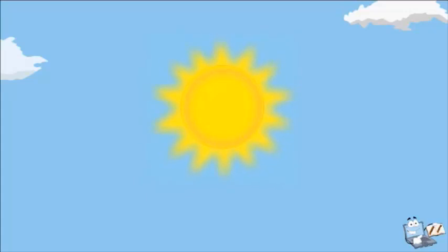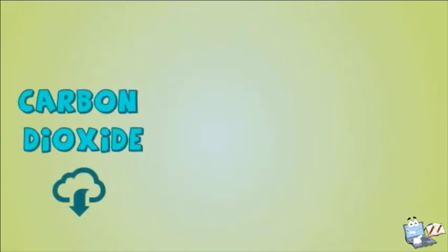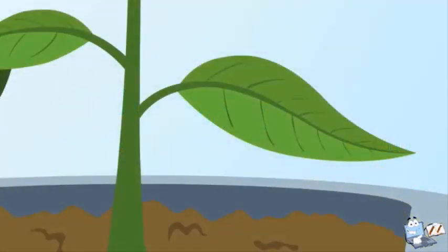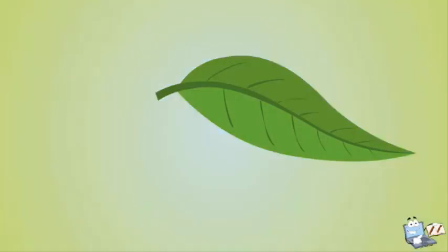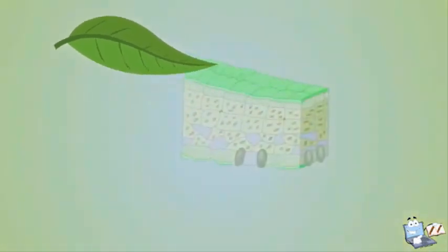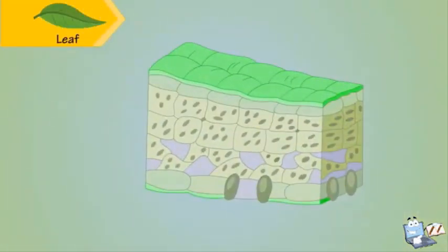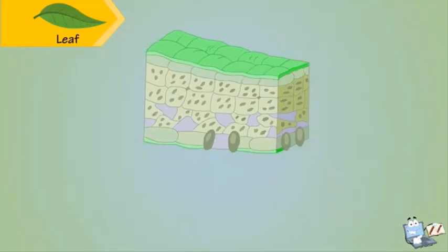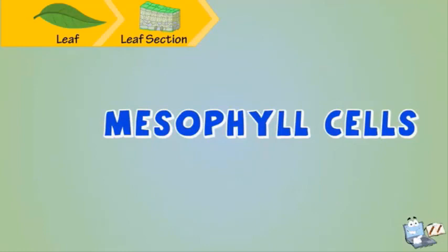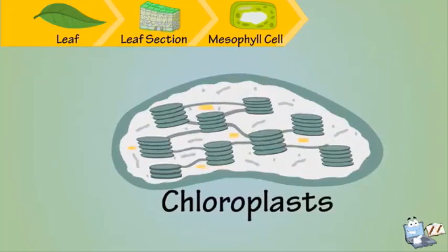So now we know plants need three things for photosynthesis: carbon dioxide, water, and sunlight. Now the process will start. Most of the action takes place in the leaves of the plant. If we cut a leaf and observe it under a microscope, we see that right below the outer layer there is a layer of soft, elongated cells called mesophyll cells. Inside the mesophyll cells, we see tiny structures called chloroplast.